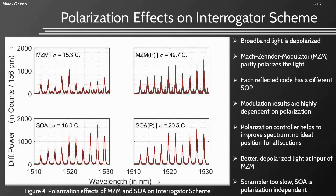After showing the proof of concept, I want to get into details about the polarization effects on the interrogator scheme. The broadband light of the SLED is depolarized. The first modulator is a Mach-Zehnder modulator, which is polarization dependent, so the output light of this modulator is partly polarized. Since there are different optical path lengths within the network, the state of polarization in front of the second modulator is changing, and the modulation result is highly dependent on the state of polarization. Therefore, different codes of different FBGs are treated differently, as can be seen in the top left diagram, where some peaks are significantly higher than others.